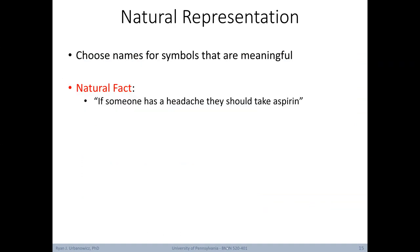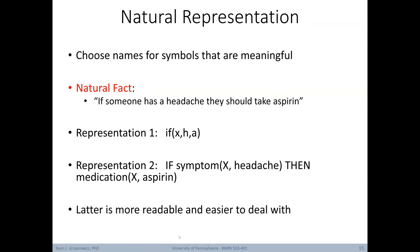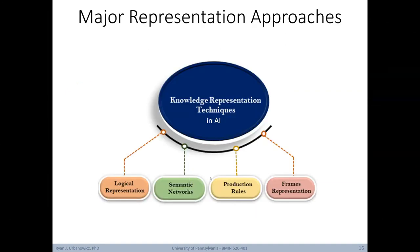It's useful to choose names for symbols that are meaningful to human beings. For example, given the natural fact 'if someone has a headache, they should take aspirin,' we could represent this in different ways. Representation one: 'if(x, h, a)' — meaning if person x has headache h, take aspirin a. Representation two is more human-readable: 'if symptom(x_person, x_has_headache), then medication_prescribed(x_person, takes_aspirin).' This is more natural and easier for both humans and reasoning systems. Within AI, there are four main representation approaches covered in this course: logical representation, semantic networks, production rules, and frames.